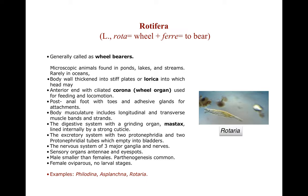The post-anal foot has toes with adhesive glands used for attachment to other organisms. Body musculature includes longitudinal and transverse muscle bands and strands. One important digestive organ is the mastax, a grinding organ lined internally with strong cuticle. In the excretory system there are two nephridia and two protonephridial tubes that empty into a bladder. The nervous system consists of three major ganglia and nerves. Sensory organs include antennae and eyespots.